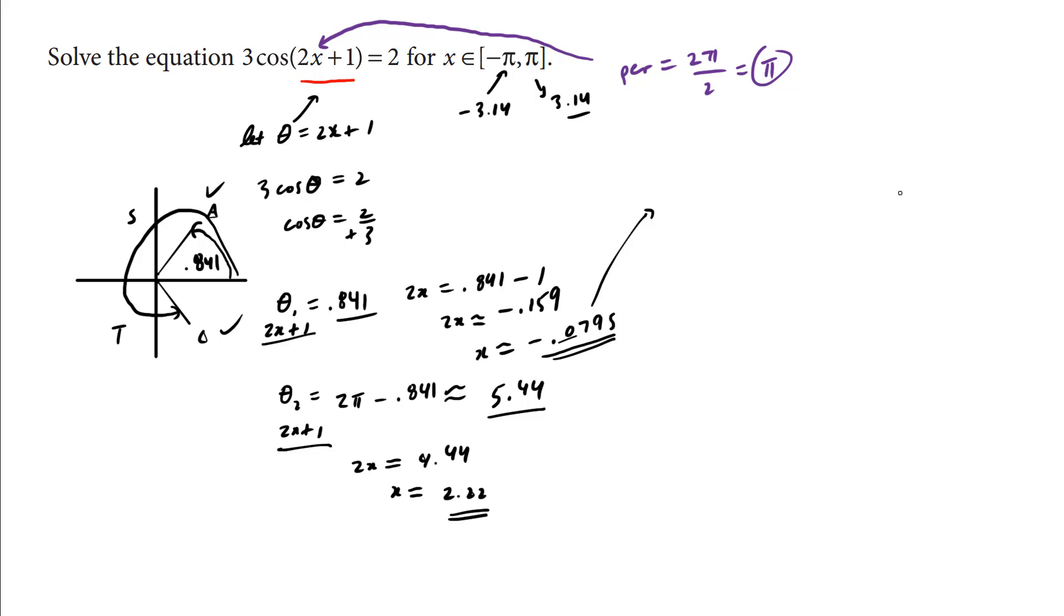These solutions keep repeating every pi radians. So this is going to be negative 0.0795 take away pi, and we have another potential solution. It's going to be negative 3.22 radians, but this is out of bounds. This is too small, as you can see. This here is the goalpost. So instead of subtracting pi, let's go the other way, let's add pi.